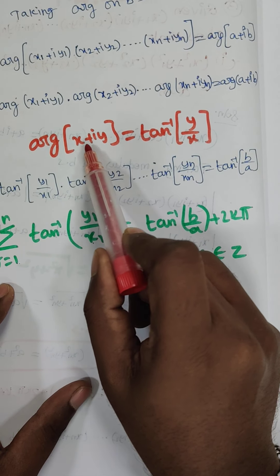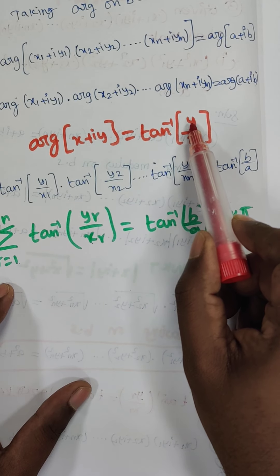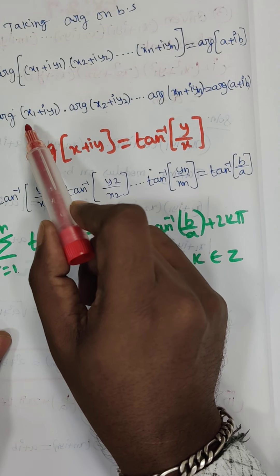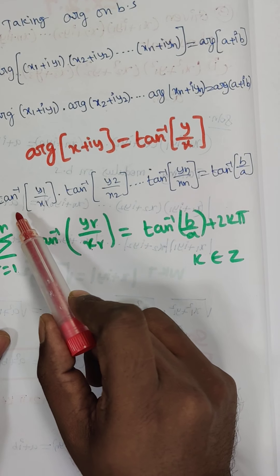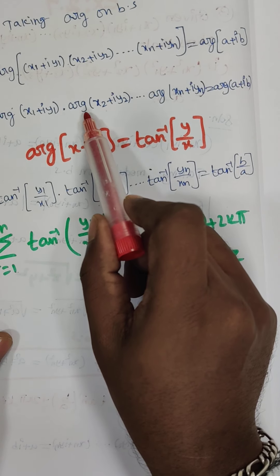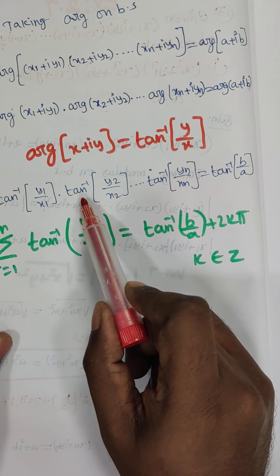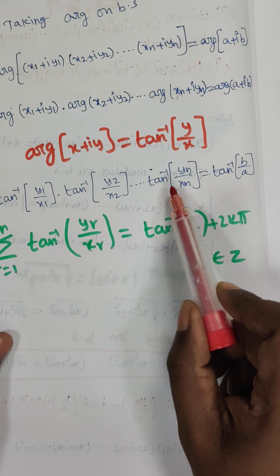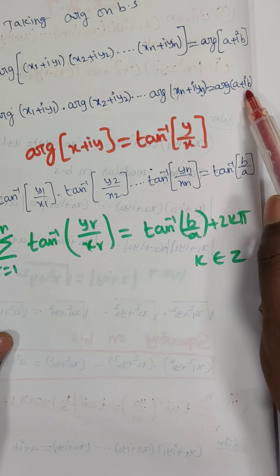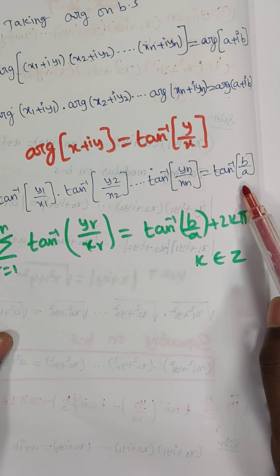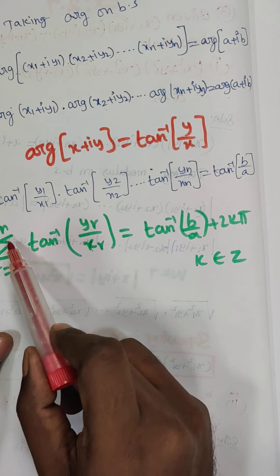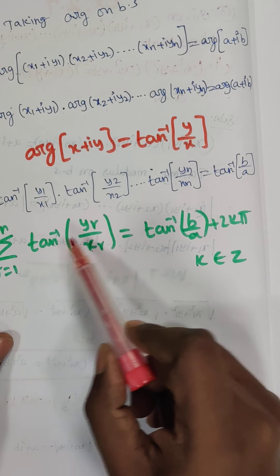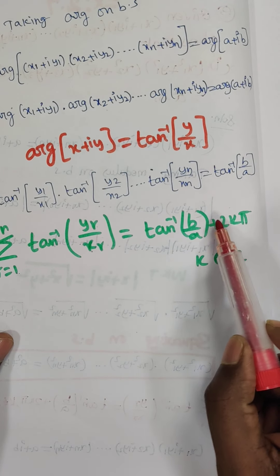We already know that arg(x + iy) = tan⁻¹(y/x). So: arg(x1 + iy1) = tan⁻¹(y1/x1), arg(x2 + iy2) = tan⁻¹(y2/x2), ..., arg(xn + iyn) = tan⁻¹(yn/xn). And arg(a + ib) = tan⁻¹(b/a). Therefore: summation r = 1 to n of tan⁻¹(yr/xr) = tan⁻¹(b/a) + 2kπ.